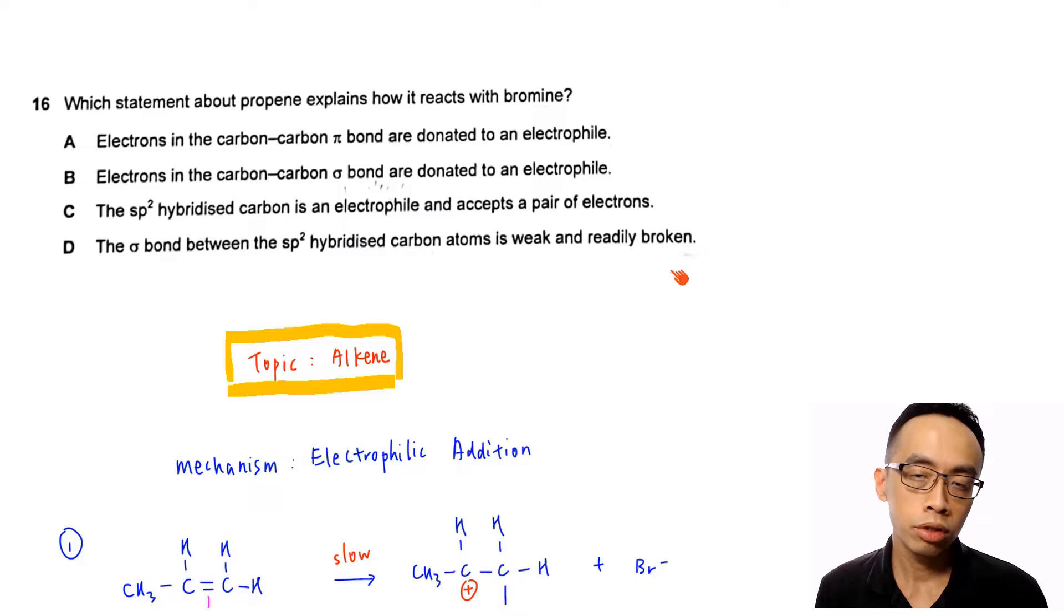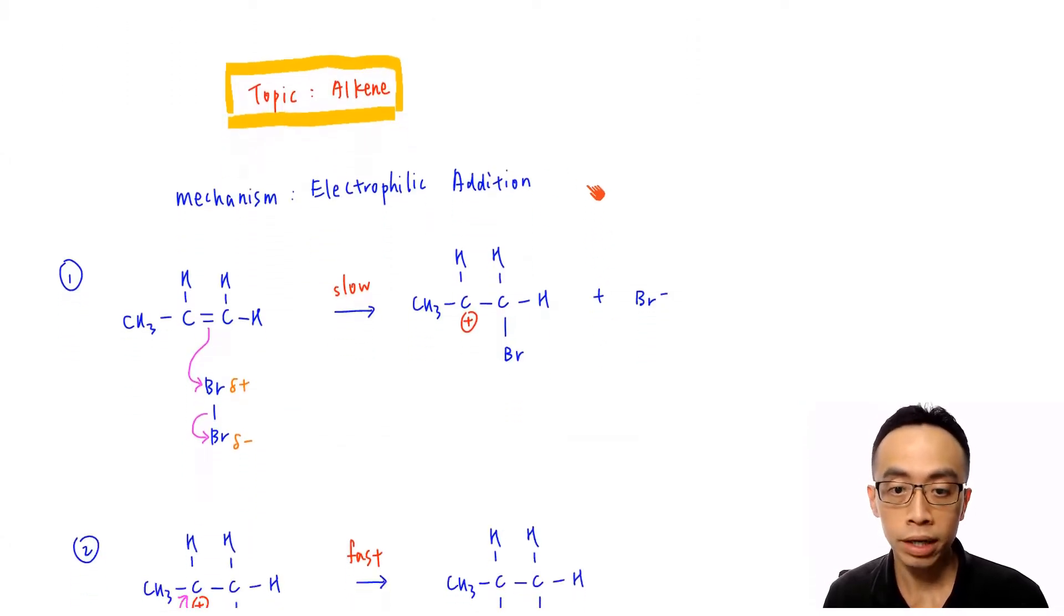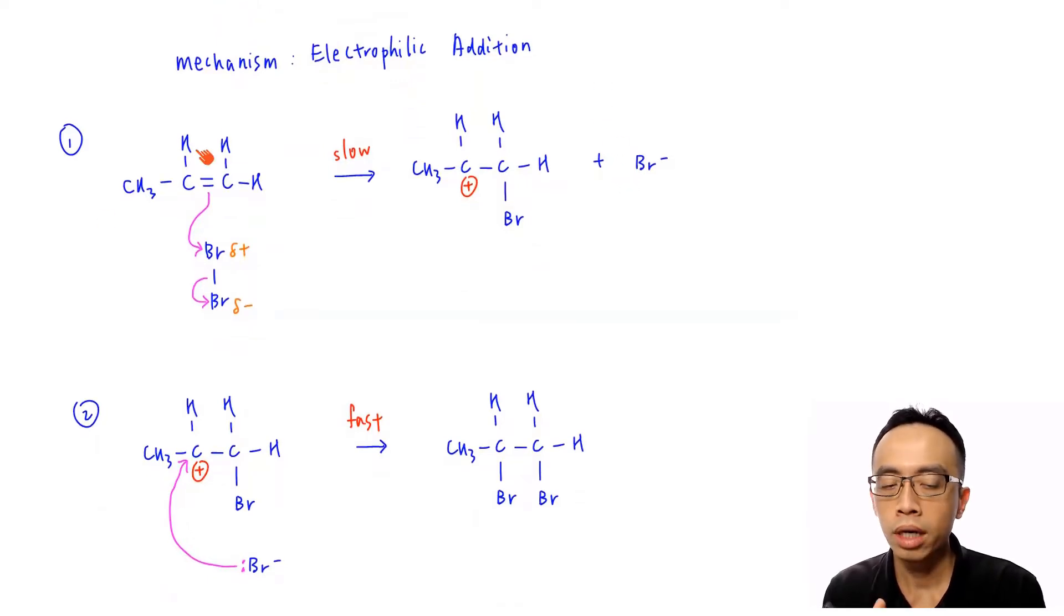So let us run through the mechanism involving electrophilic addition of propene with bromine. Then we come back to the options and we will be able to understand each one of them a lot better. Now as mentioned previously, the mechanism for alkene would be electrophilic addition. And the mechanism involving electrophilic addition is actually pretty straightforward. Alkene is considered electron-rich because I have four electrons between two carbons.